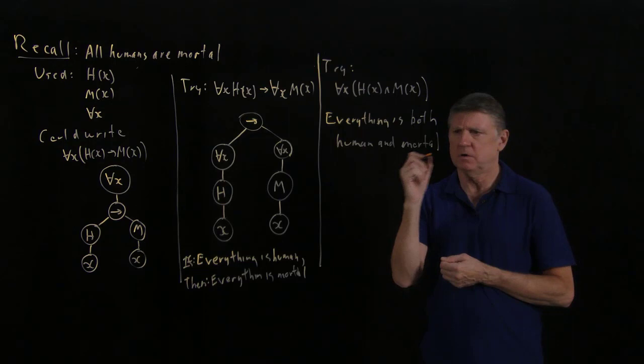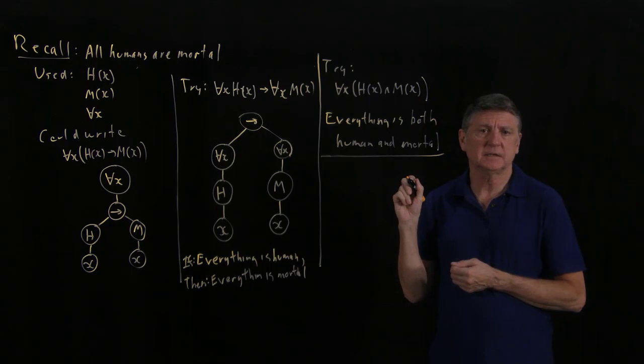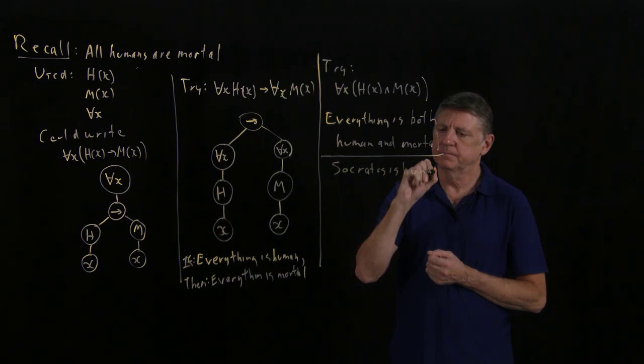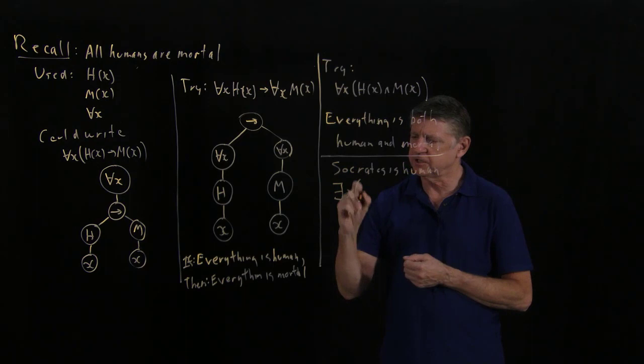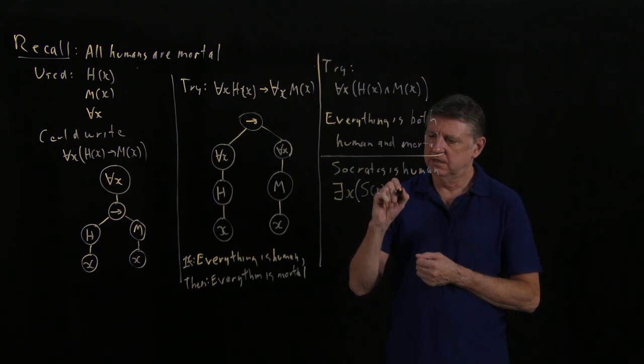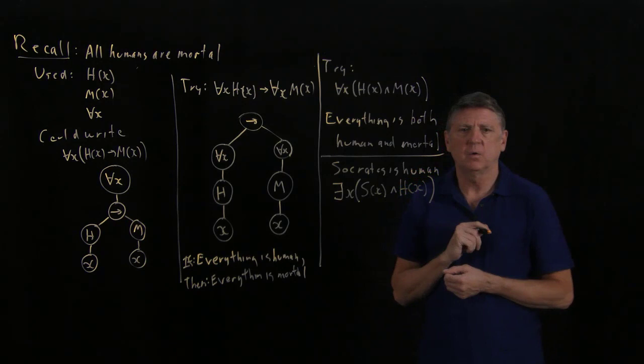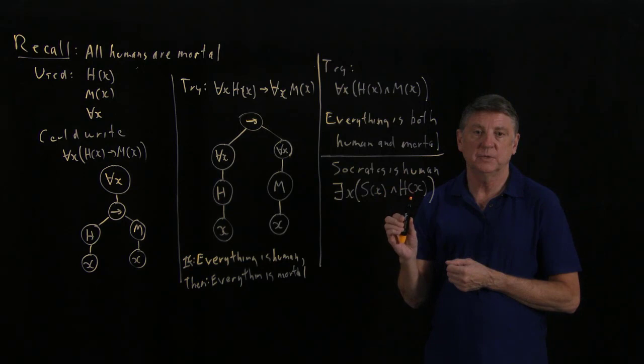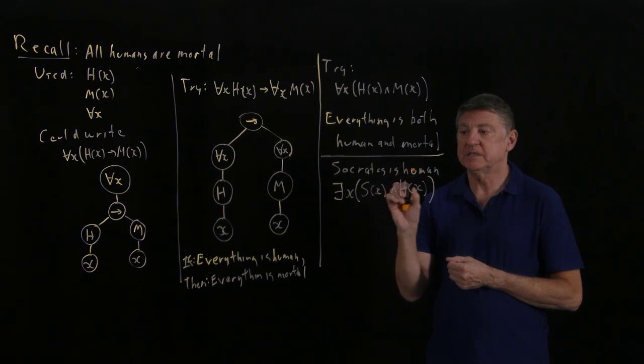Now let's turn to the second sentence of Aristotle's syllogism: 'Socrates is human.' The way we translate that is: there exists an x such that x is Socrates and x is human. What we're asserting is there exists an x such that x is Socrates and x is human. Does that capture the idea that Socrates is human? The answer is yes.